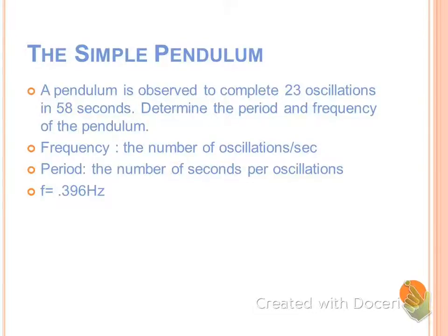Remember that all we have to do is, if you can't decide which number you should divide by, just look at the units. The units for frequency is oscillations over seconds, so that means we should take 23 divided by 58.